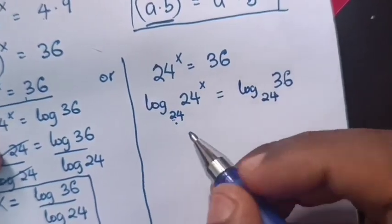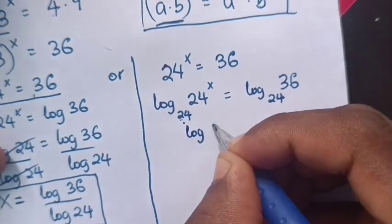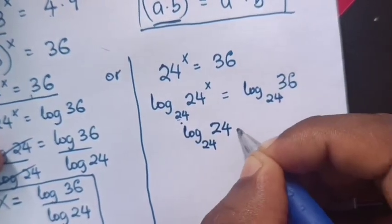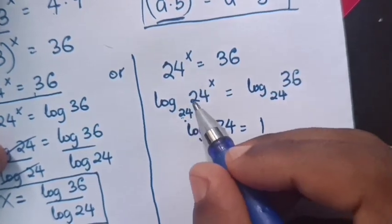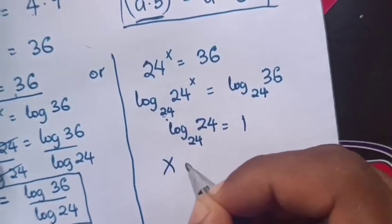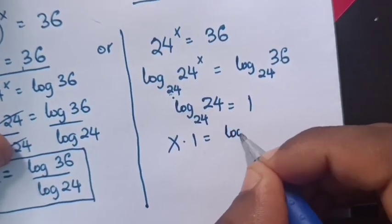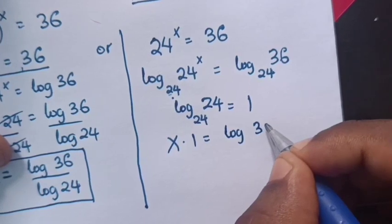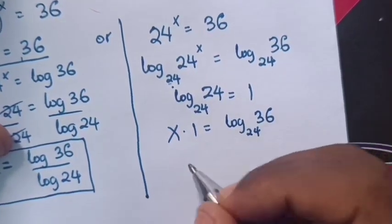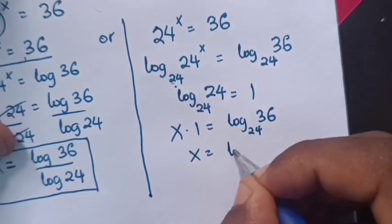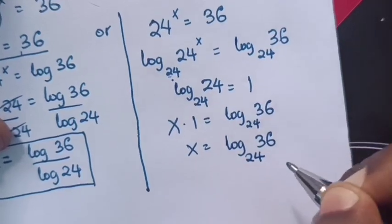Log of 24 base 24 is equals to 1. So in our equation it will be x times 1 is equals to log of 36 base 24. Therefore, x is equals to log 36 base 24.